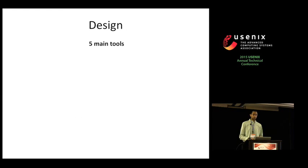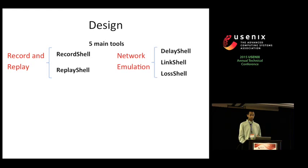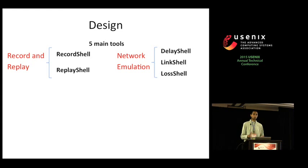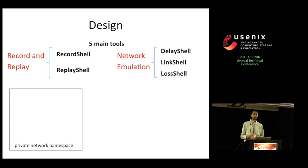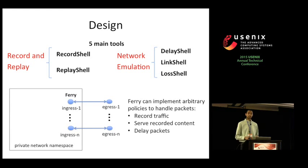MahiMahi has five main tools, each structured as a Unix shell. For record and replay, it includes record shell and replay shell. For network emulation, it includes delay shell, link shell, and loss shell — all of which can be nested within one another. On startup, each tool creates a private network namespace for itself, with ingress interfaces inside and egress interfaces outside, connected via packet fairies where the logic of each tool is implemented.